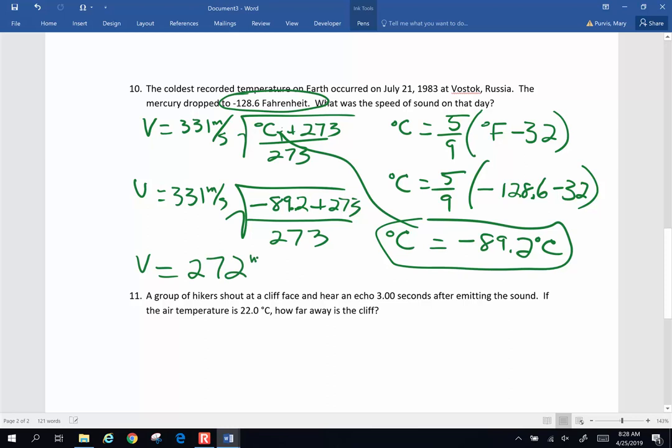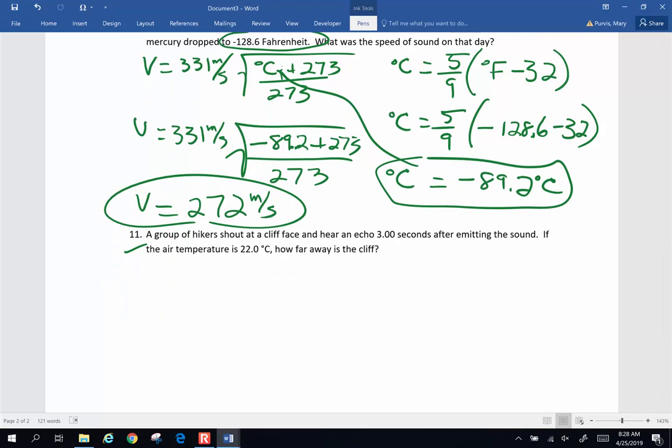Number 11. Number 11 says that we have a group of hikers shouting at a cliff. They hear an echo three seconds after emitting the sound. If the air temperature on that day is 22 degrees Celsius, how far away is the cliff? Well, if you're given an air temperature, you know you're going to have to find the velocity of sound. So let's just go ahead and do that right away.